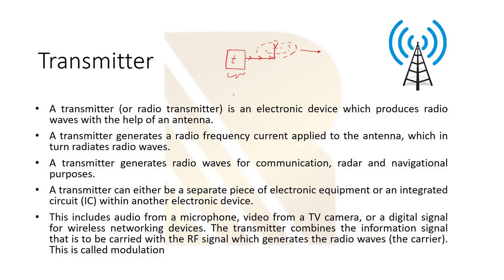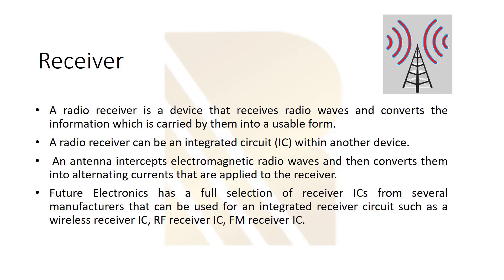A radio receiver is a device that receives radio waves and converts the information carried by them into a usable form. Radio waves arrive at the antenna, are converted to an electric signal, and pass into the receiver. For the transmitter, low-frequency data is shifted up to high frequency. In the receiver, we do the reverse — we separate the data from the high-frequency carrier signal, recovering the original low-frequency data.